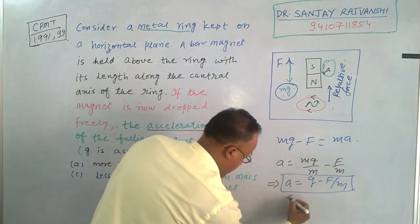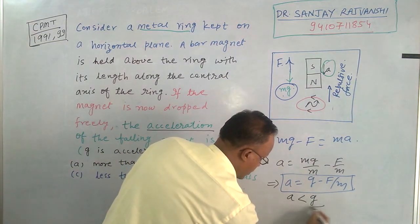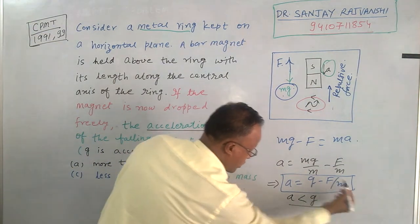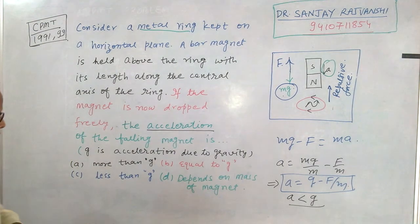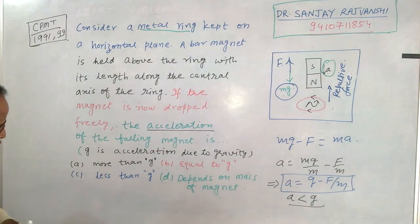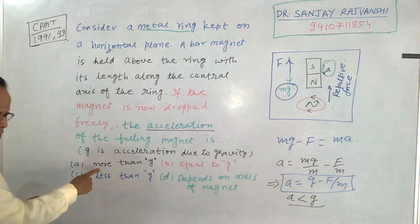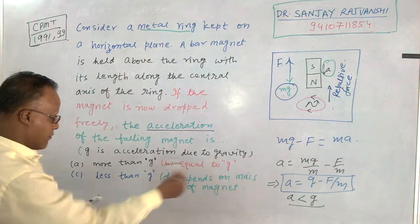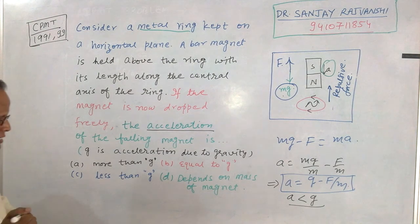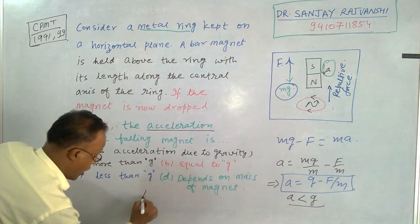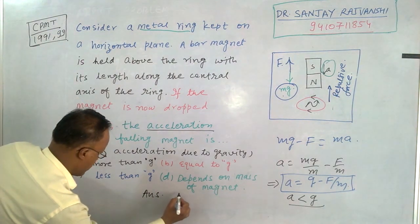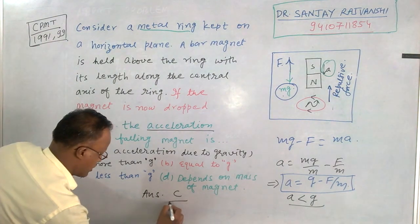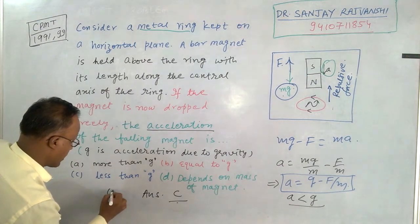Because the upward repulsive force opposes gravity, A is less than G. The answer choices are: A — more than G, B — equal to G, C — less than G. So our answer in this case is C.